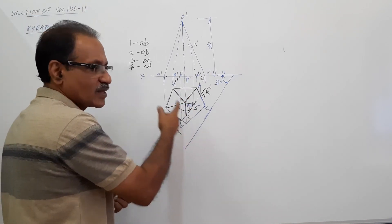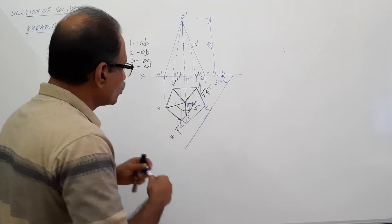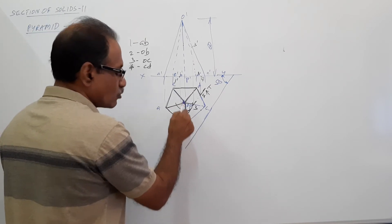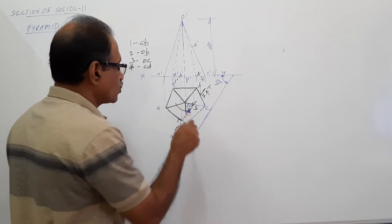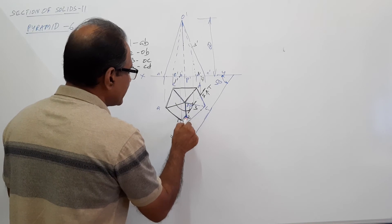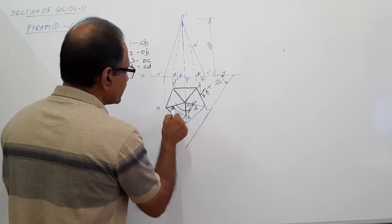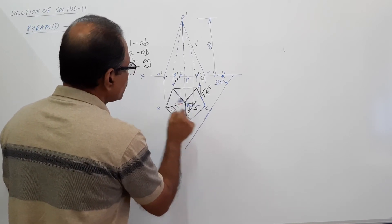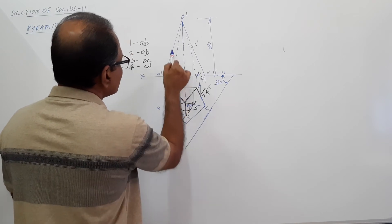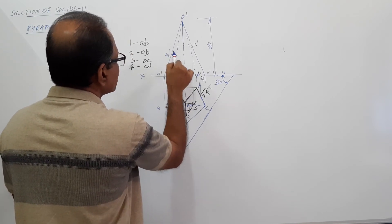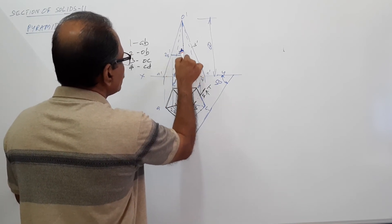2 is on OB, which you have to find out. What do you do? O is center. 2 is on OB, so 2 dash you have to find out. O was center, O2 was radius. Draw an arc. I come here, 2. Project it to 2 dash. Draw a horizontal line, 2 dash.